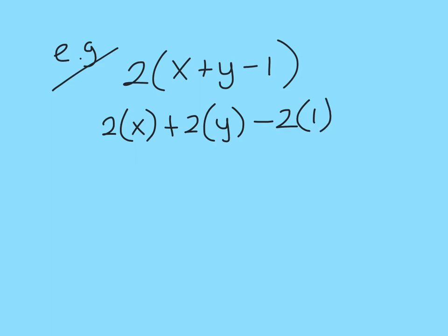So again, if I just use the loops, all I did there was 2 by x, 2 by plus y, and 2 by minus 1. Just let's tidy that up. So I get 2x plus 2y minus 2.